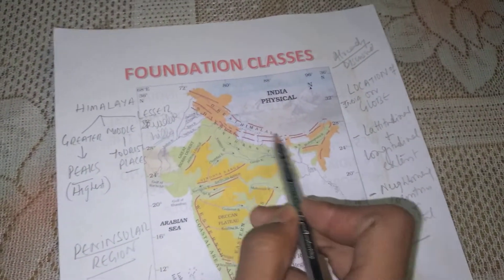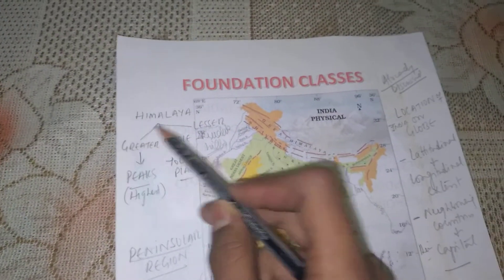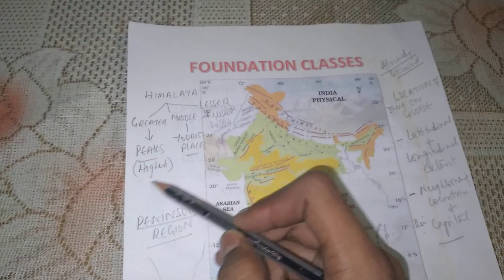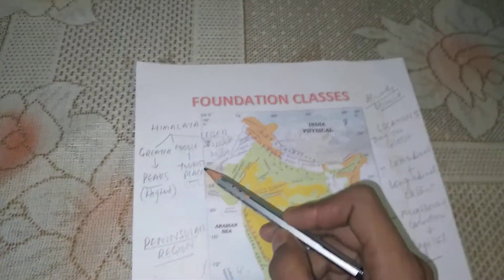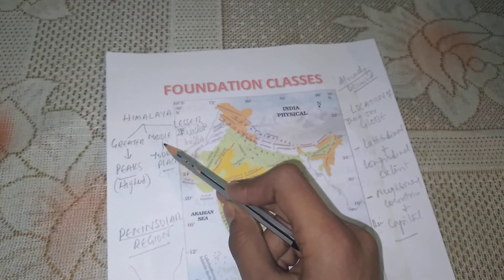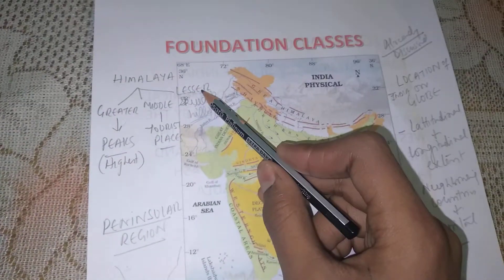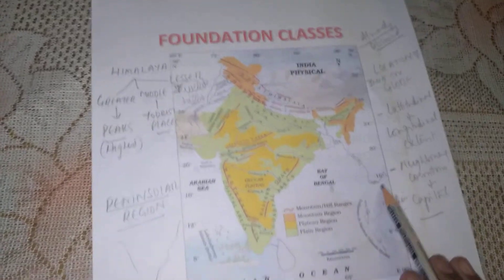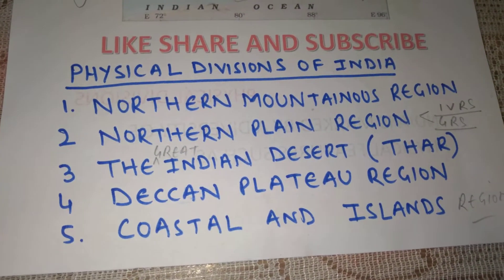This is the Himalayan region. The Himalayan region is further divided into three parts: Greater Himalayas, Middle Himalayas, and Lesser Himalayas. The highest peaks in the world are found in the Greater Himalayas, the tourist places of India are in the Middle Himalayas, and the Lesser Himalayas are the Shivalik Hills.